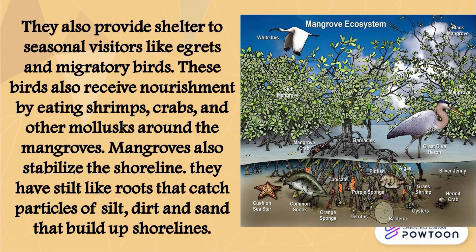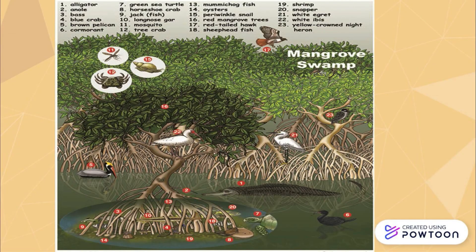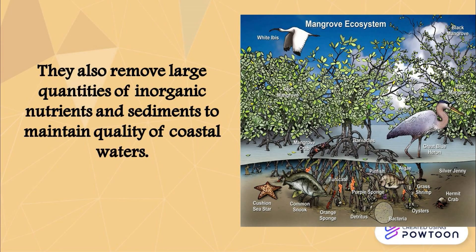Mangroves also stabilize the shoreline. They have stilt-like roots that catch particles of silt, dirt, and sand that build up shorelines. They also remove large quantities of inorganic nutrients and sediments to maintain the quality of coastal waters.